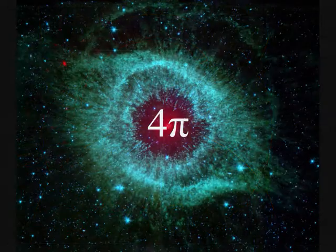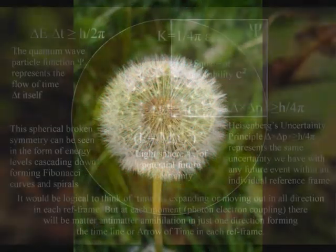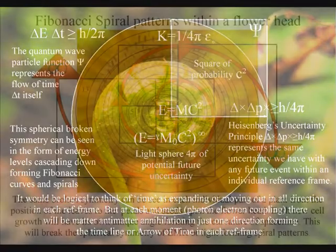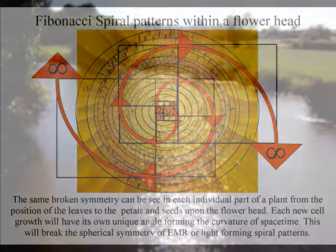We have a universal process of spherical symmetry forming and breaking that forms the spiral of life as time unfolds, photon by photon or moment by moment. This process creates a blank canvas that we can interact with from the center of our own reference frame.